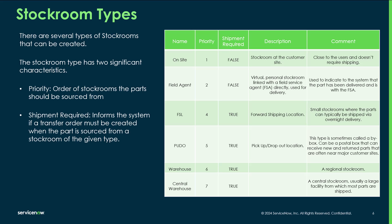The shipment field tells the system whether a transfer order needs to be created when a part is sourced from that stock room. For example, if a part is in a personal stock room and doesn't require shipment, then you don't really need a transfer order.